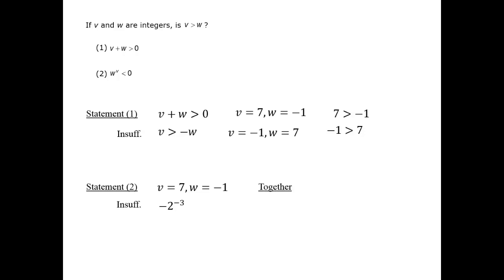Combining the statements, we prefer to use pre-existing cases if there are any that are allowed by both statements. Indeed, the case v equals 7, w equals minus 1 is allowed by both statements, as we've already seen.